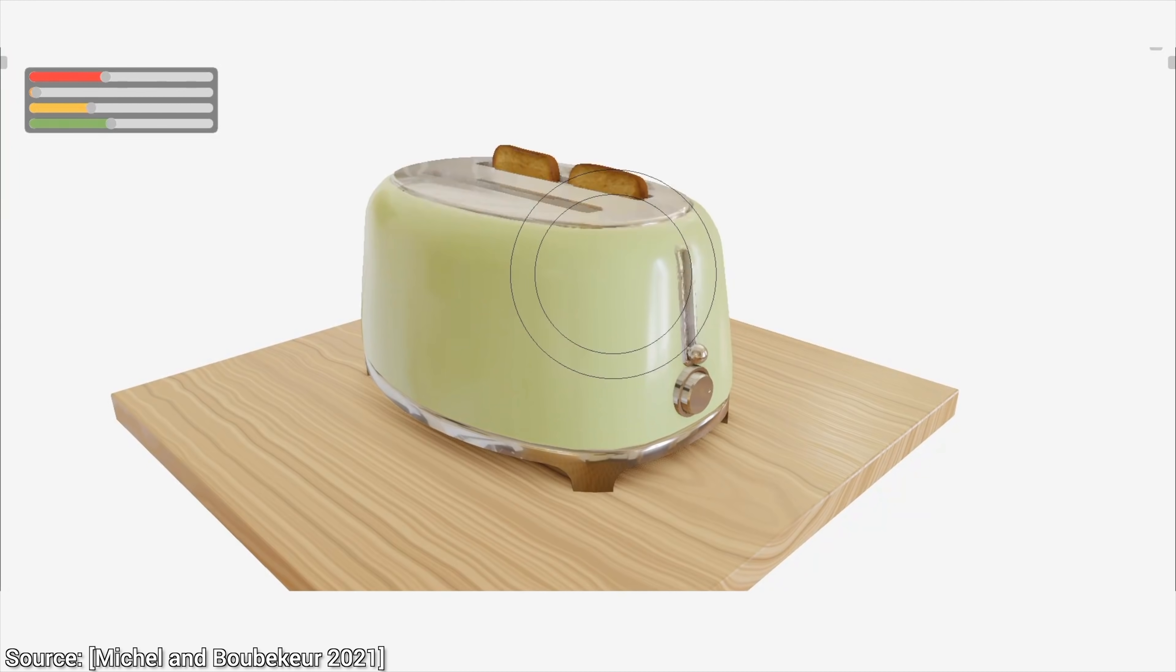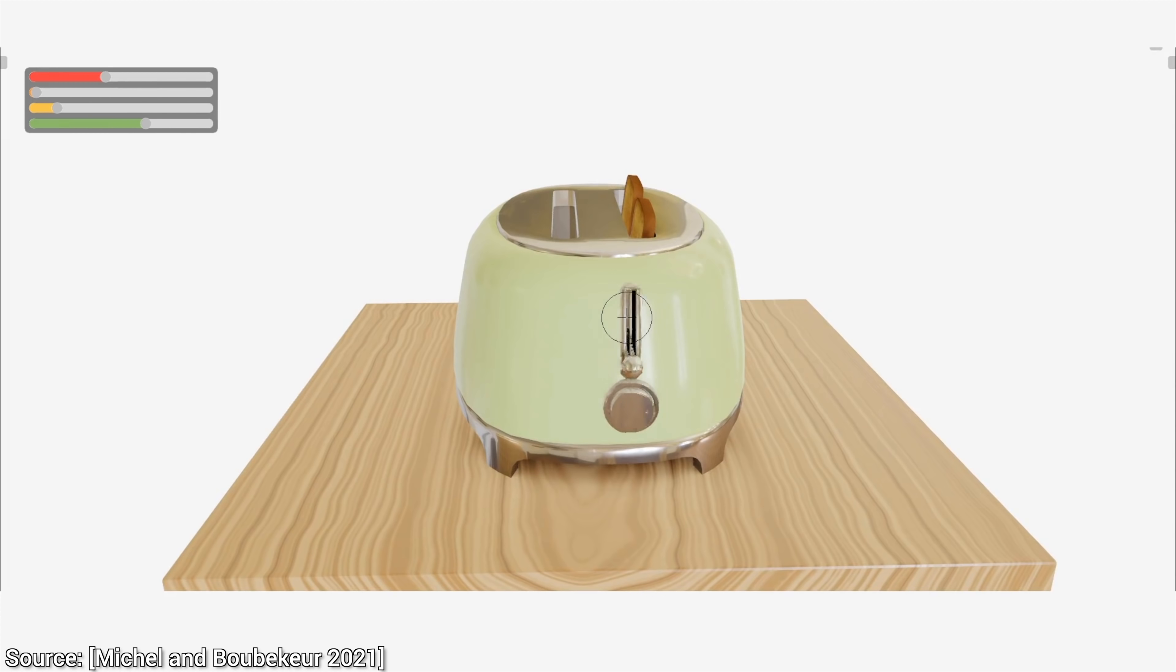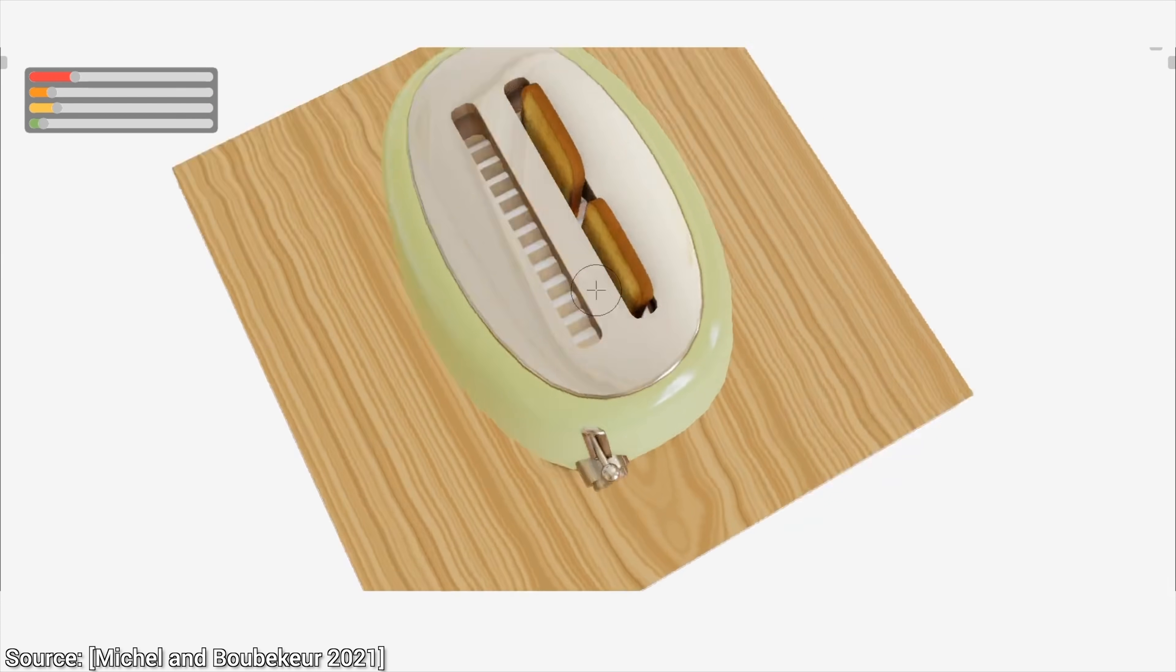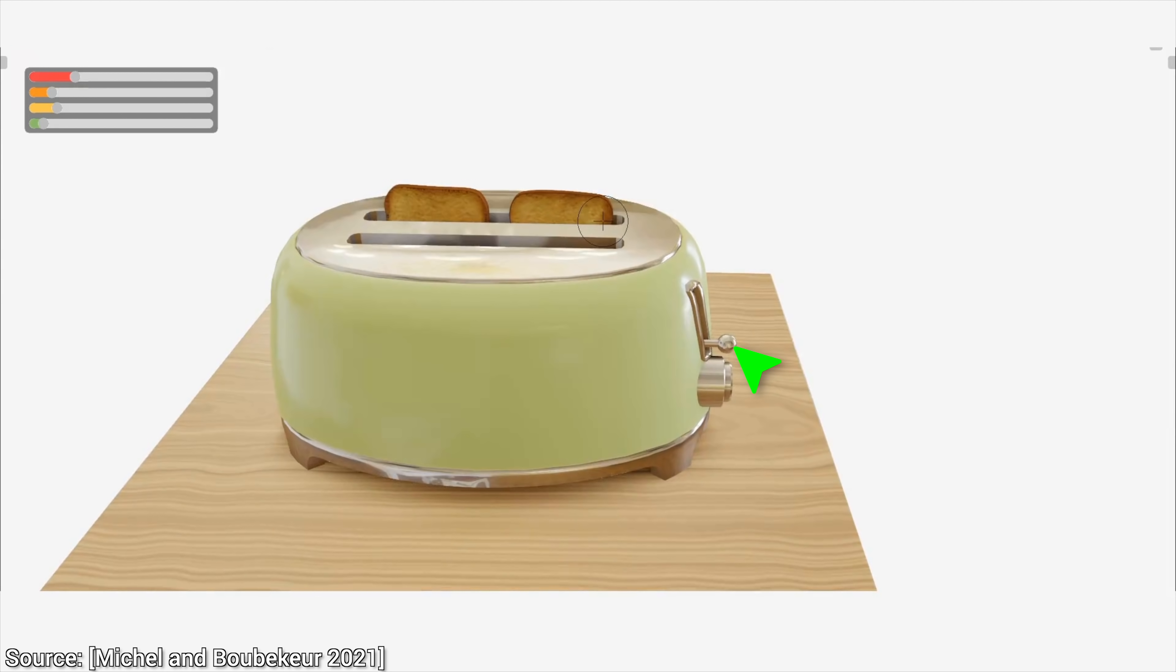But something else also happens. Look, it also understands the body's relation to the other objects that are connected to it. We can also change the location of the handle, the slits can be adjusted symmetrically, and when we move the toast, it understands that it moves together with the handles. This is super useful.